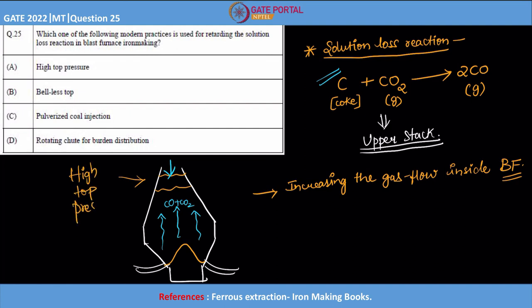what happens is that whatever CO that is forming, because of this pressure over here, it cannot escape out easily. Because this pressure that you are providing is resisting the gas flow. So in that sense, you can actually increase the residence time or gas flow inside the furnace, even if there is some solution loss reaction.